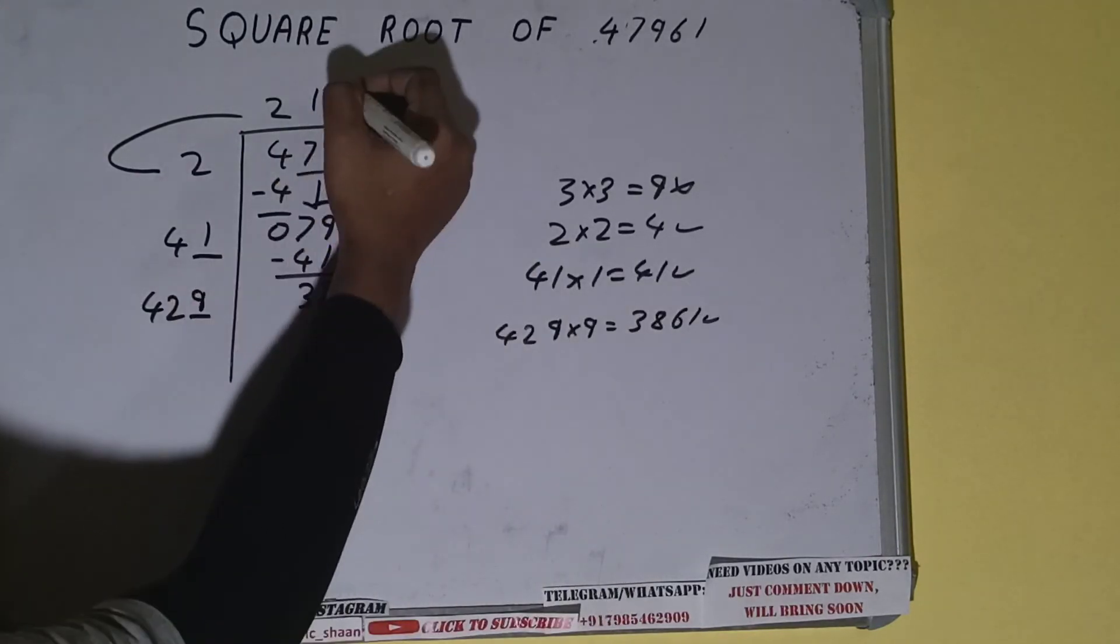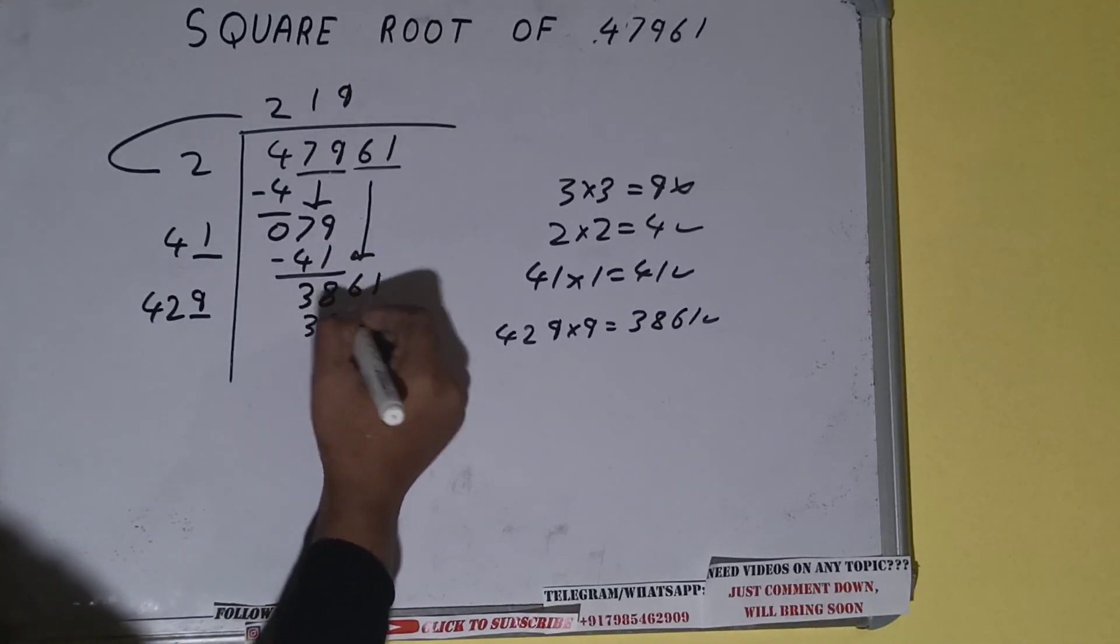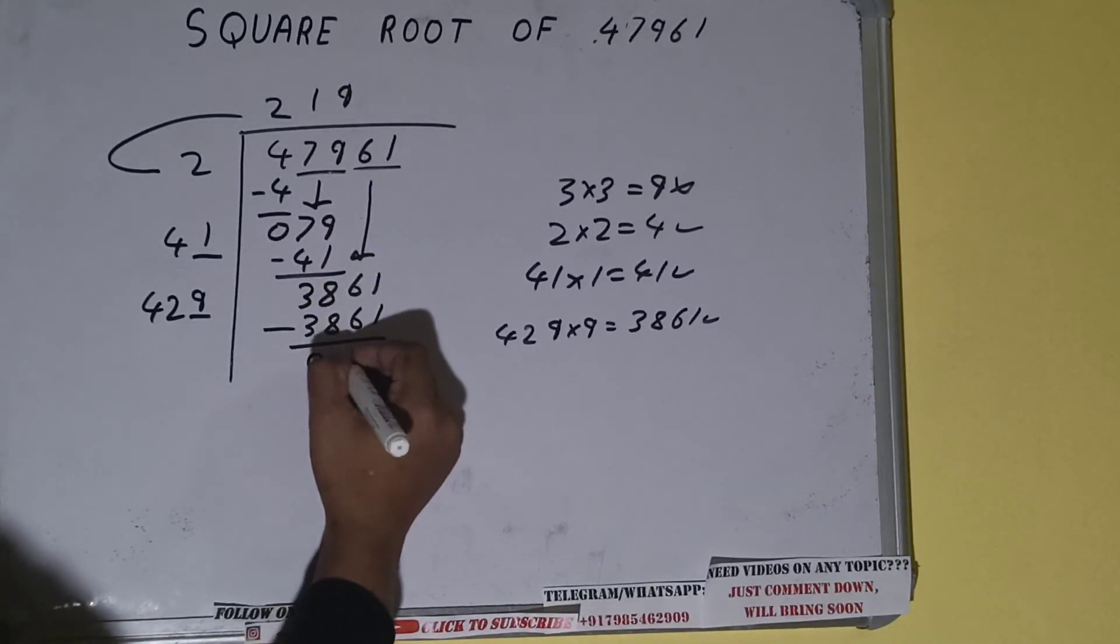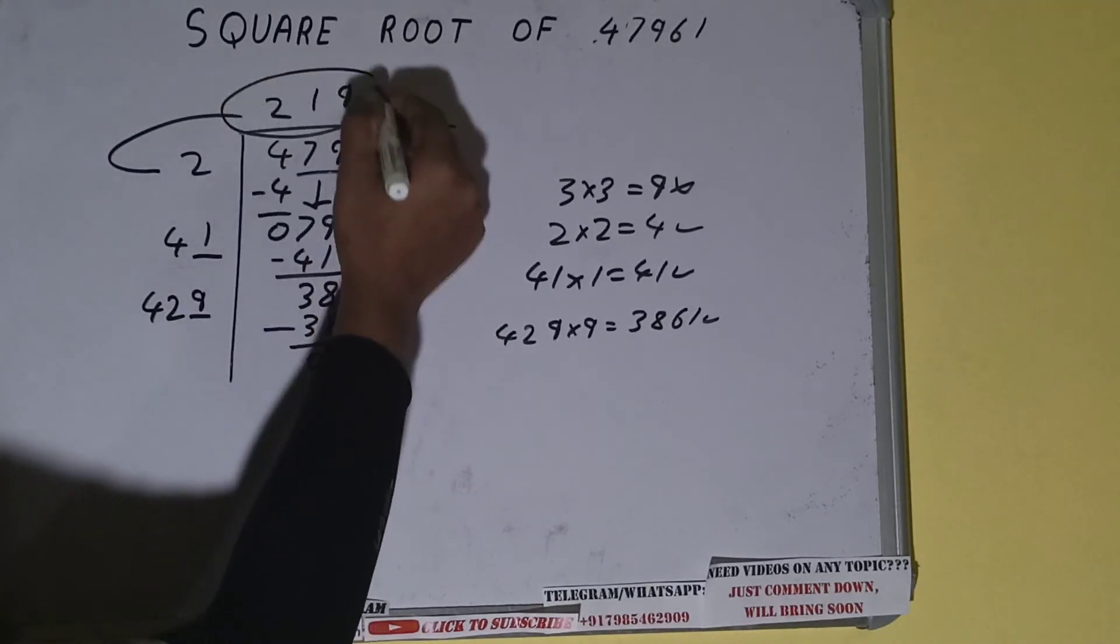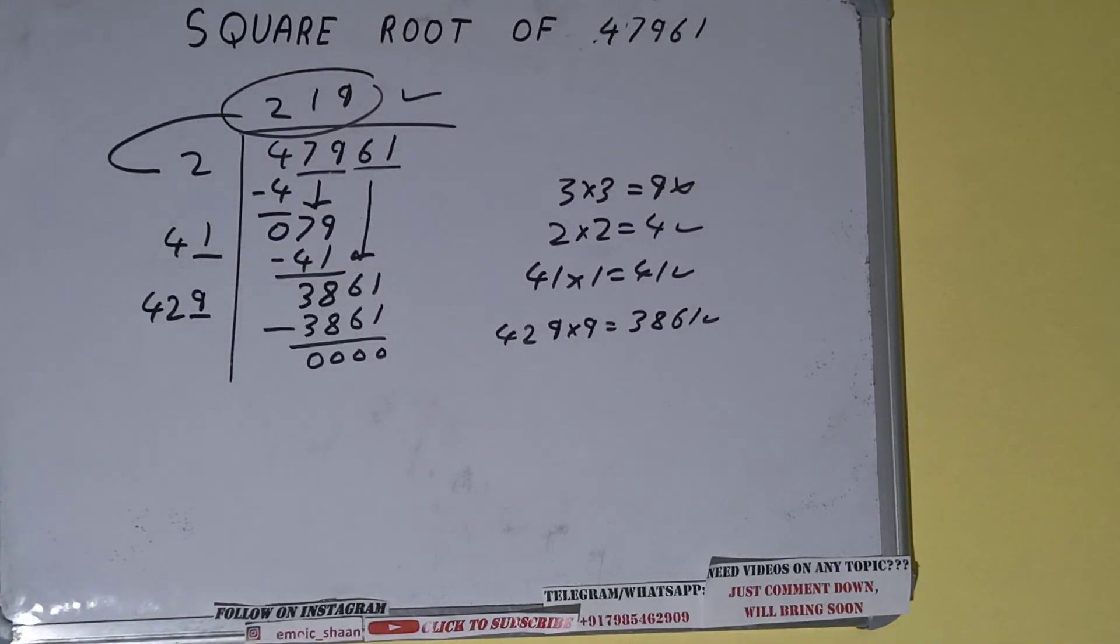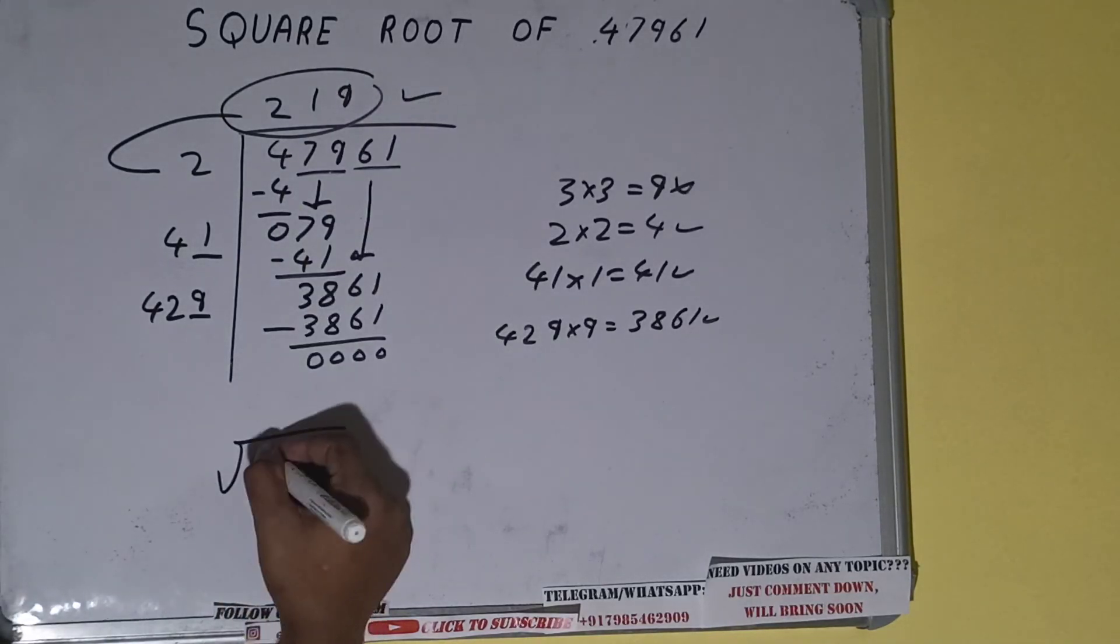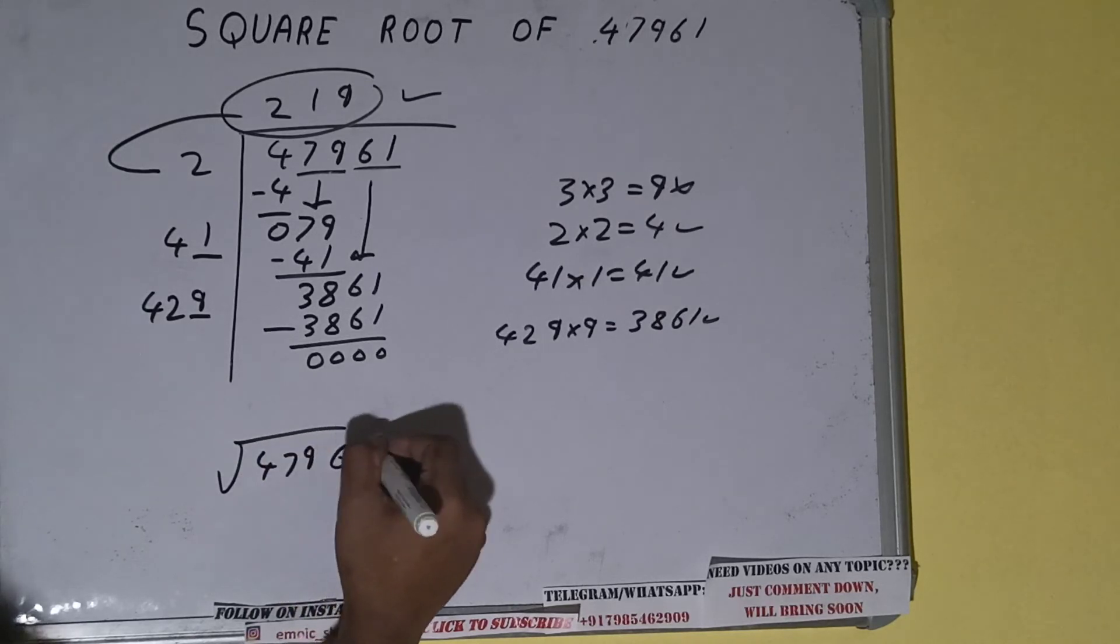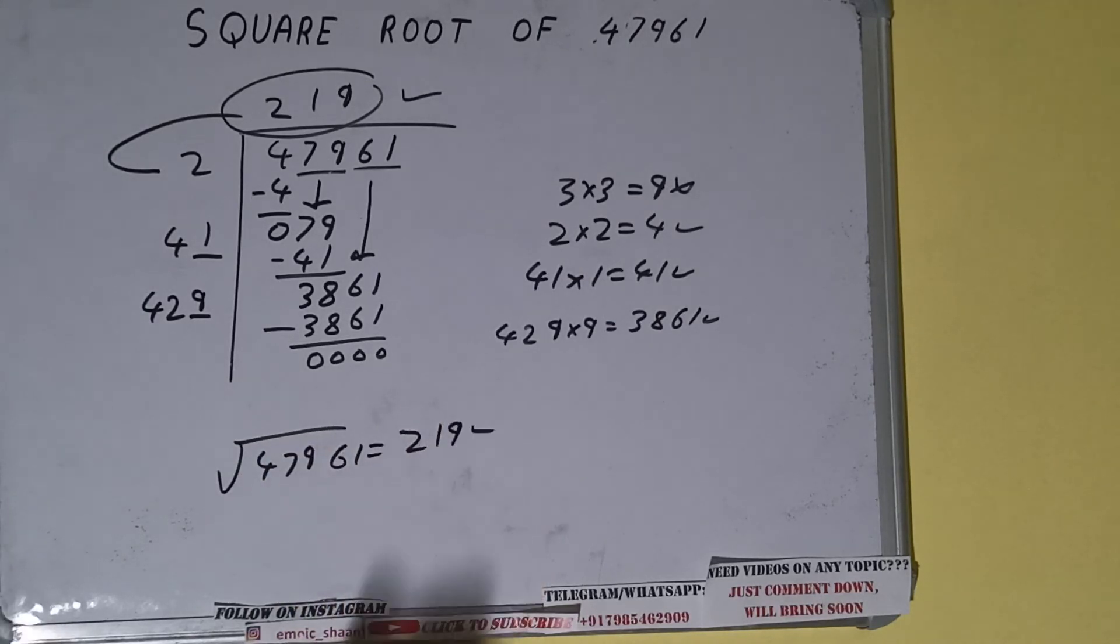So 9 here and 9 here, 3861 subtract and we'll get 0. Once we get 0, whatever we have in the quotient will be the answer, that is 219. So the square root of 47961 is 219. That's it.